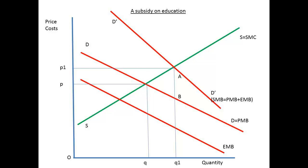The benefit to the individual is increased earnings over a lifetime. The benefit to society includes increased productivity, and the possibility that this will help to raise the incomes of others. The original demand curve is shown as DD, the private marginal benefit. However, it is then determined there is an extra marginal benefit, EMB, and the social marginal benefit produces a curve of DD-dashed.